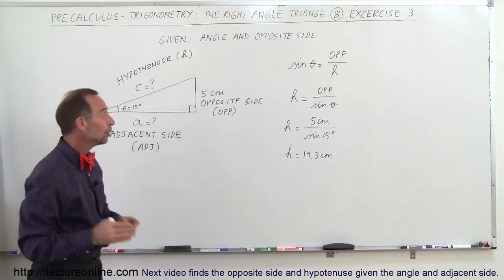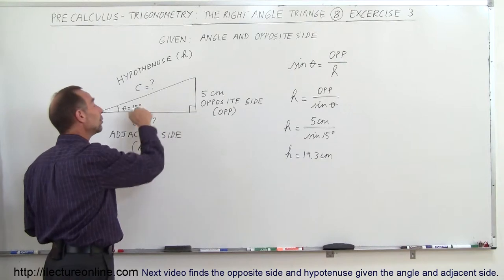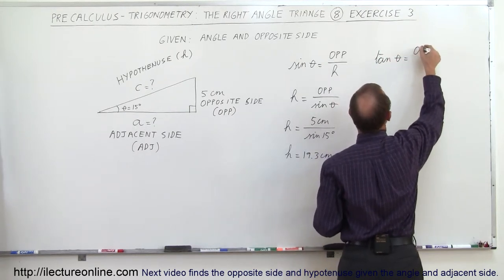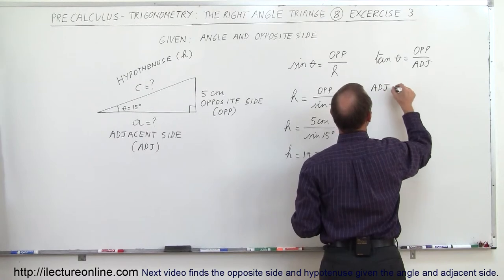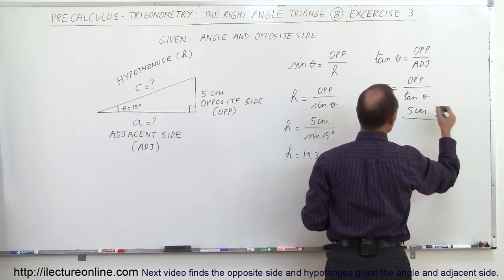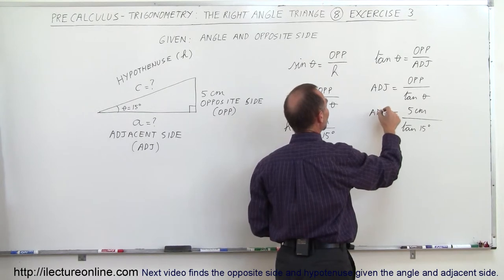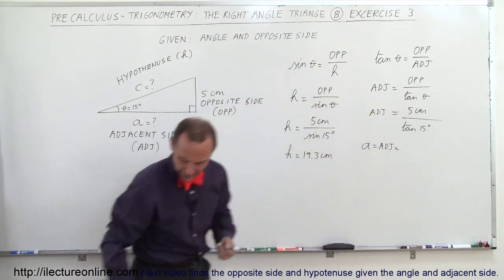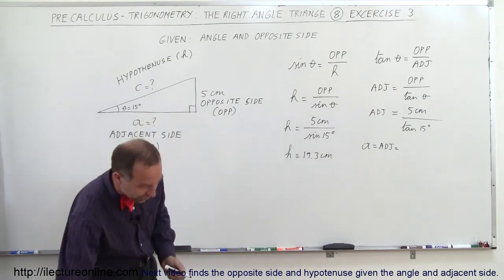Now what about the adjacent side? Now that we know the hypotenuse we could use the cosine, or I can simply do it this way. I know the opposite side, I don't know the adjacent side, and I know the angle. There's another trigonometric function that might help me — for example, the tangent of theta by definition is the ratio of the opposite side divided by the adjacent side. Since I'm looking for the adjacent side, I can write this as: the adjacent side is equal to the opposite side divided by the tangent of theta. Since the opposite side is 5 centimeters and theta is 15 degrees, I take 5 divided by the tangent of 15 degrees, which equals 18.7 centimeters.